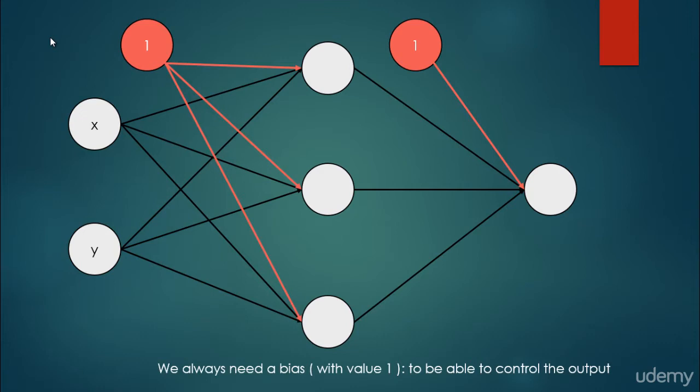It's very important that we always need a bias neuron with value 1 — the value is always 1 for these bias neurons — and it's needed to be able to control the output. For example, consider the situation when X and Y are both equal to 0, and we want the output not to be 0 even when the input is 0. This is why we need this extra bias neuron, and feed-forward neural networks always include bias neurons.